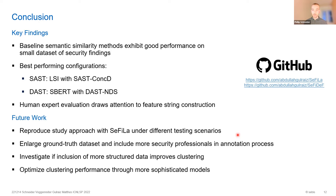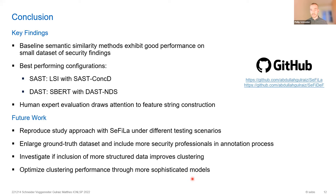We tested only three baseline methods for semantic similarity to show the feasibility of this approach. In the future, one could try using other kinds of structured data from the JSON files, or more sophisticated models — for example, BERT models specifically trained on text data from the security domain. With this, I thank you for your attention and I'm happy to answer any questions.